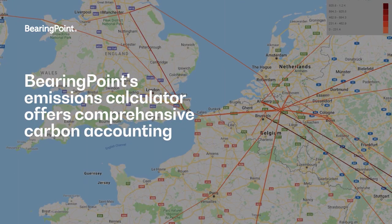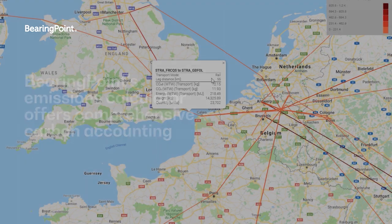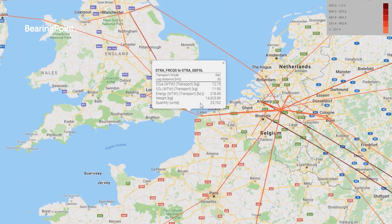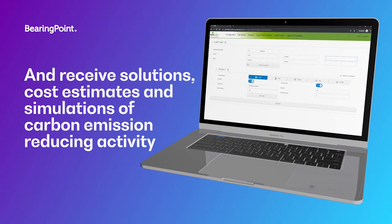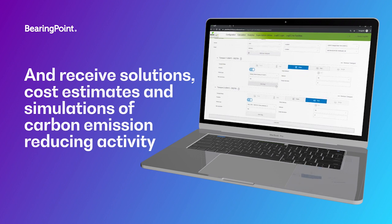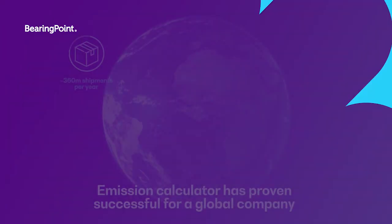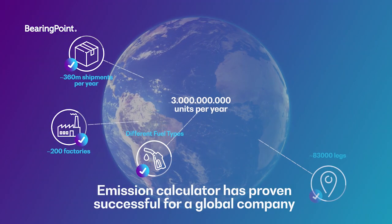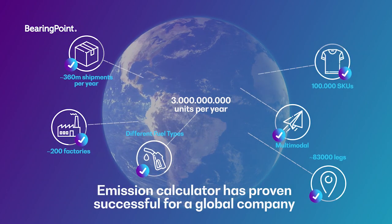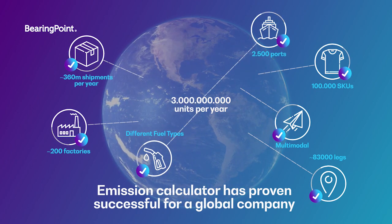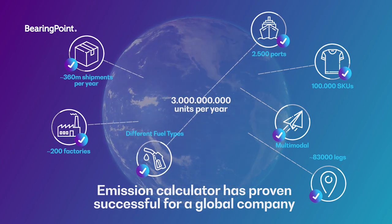From the carbon footprint of a single product to understanding the carbon footprint of your entire operations, BearingPoint's Emissions Calculator offers a comprehensive carbon accounting service. Far from just an analytics tool, the advanced software means you can interpret data in detail, simulate solutions to reduce your carbon footprint, and pinpoint the trade-offs between costs and emissions. Our emissions calculator has already helped a global, fast-moving consumer goods company understand their carbon footprint from cradle to grave for each individual product.